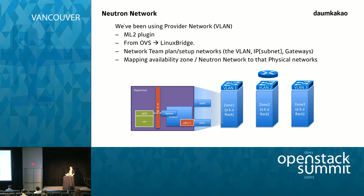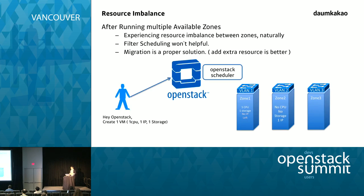Right after the network team plans and sets up the network VLANs and gateways, we re-map the availability zones and Neutron networks to the physical networks, which is really easy for us. After running multiple availability zones, we experienced resource imbalances across zones naturally. At the start of the service, we allowed developers to select their zones. So if a developer selects zone one and there's no IP, they get an error. Then they select zone two, which has no CPU resources, and get another error.